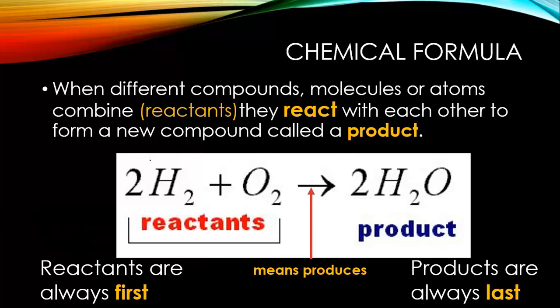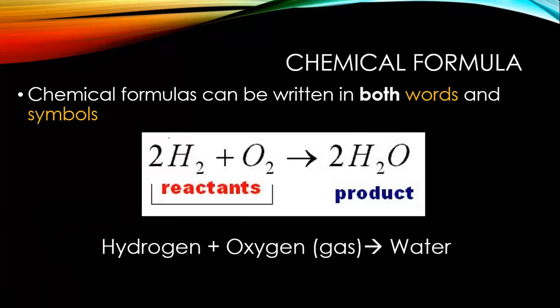Let me go over that again. When I've got two molecules, atoms, or compounds reacting with each other, they're called reactants and they produce something called a product. I hope that makes sense. Reactants come first, then produce a product. Chemical formulas can be written in both words and symbols. We've got symbols at the top, the element symbols, and then words at the bottom. I've got the word formula for this chemical formula at the top with hydrogen.